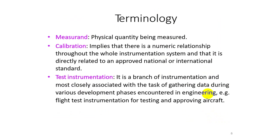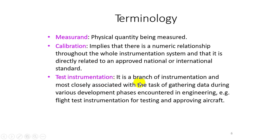Key terminologies: measurement is the physical quantity to be measured. Calibration implies the numerical relationship — the meter must be compared with a national or international approved standard system and set correctly. Test instrumentation is a branch of instrumentation associated with gathering data during various development phases — for example, flight test instrumentation for testing and approving aircraft.